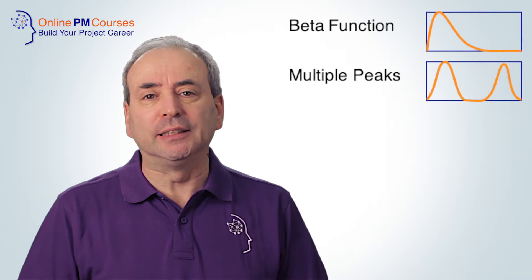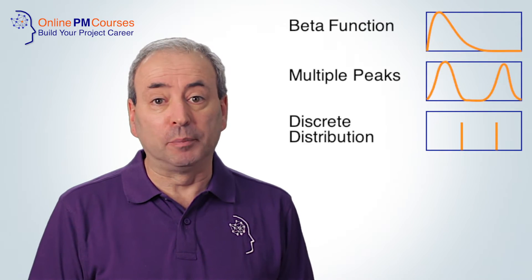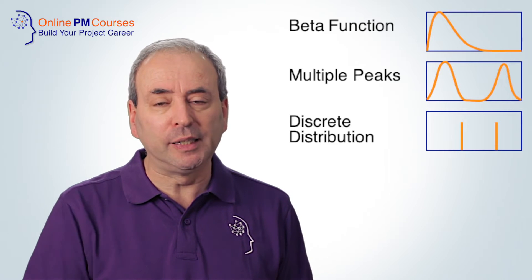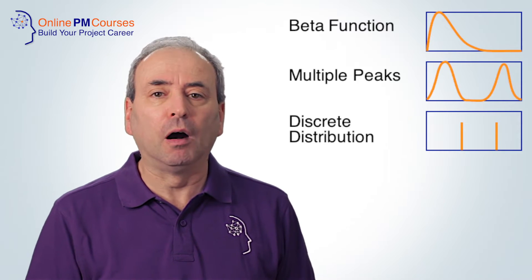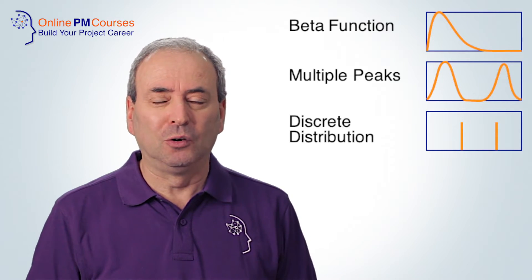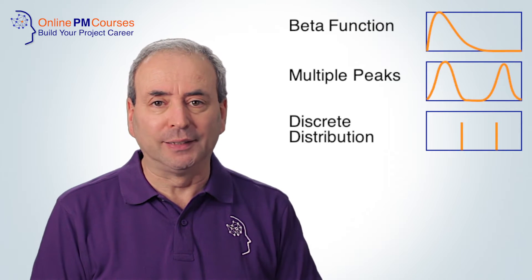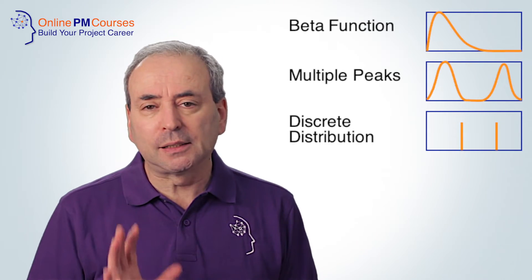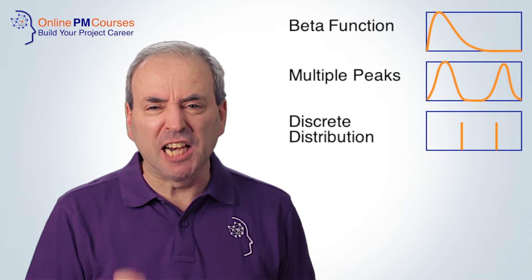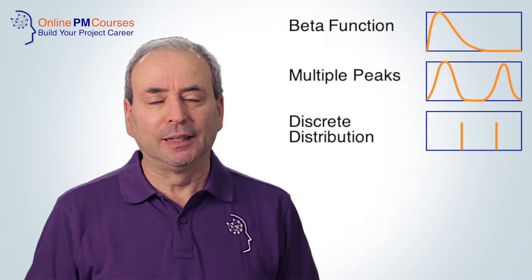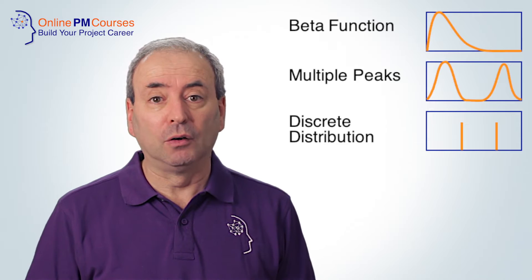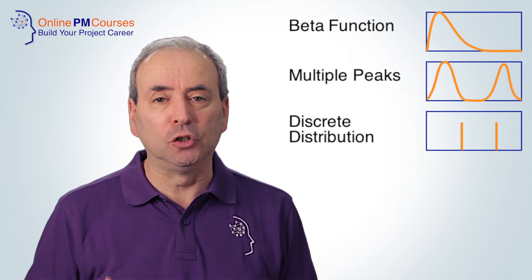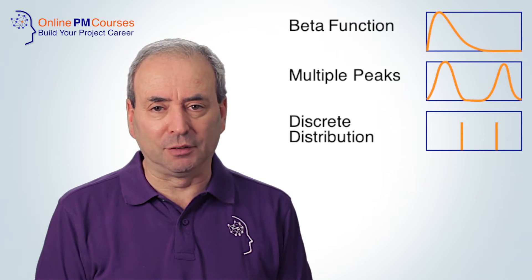A discrete distribution says that we could be delayed, for example, by two days or three days, but not by two and a half or three and a half, or even one and a half or one day. And sometimes activities are genuinely like this — certain levels of delay or early performance are just not possible given the nature of the task.